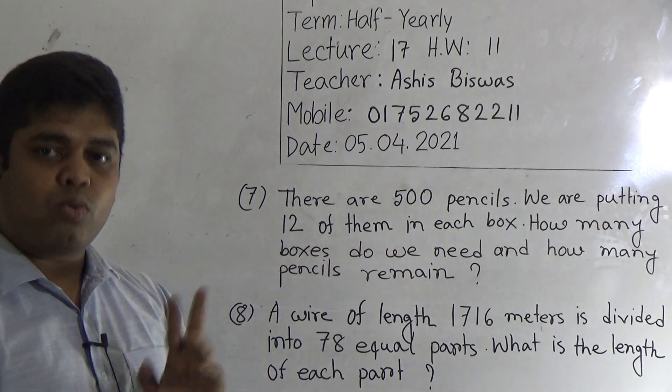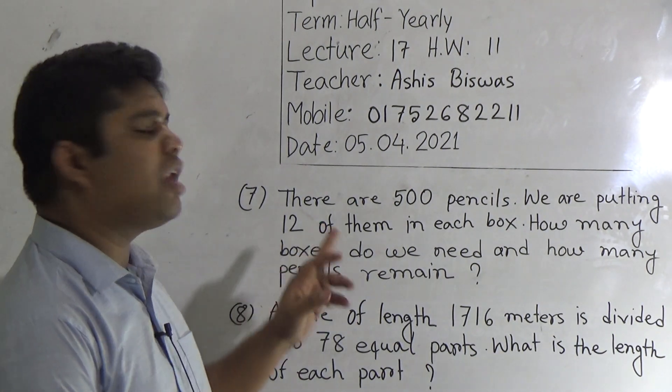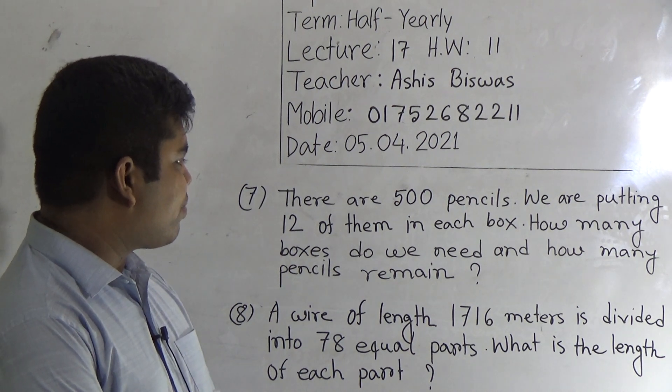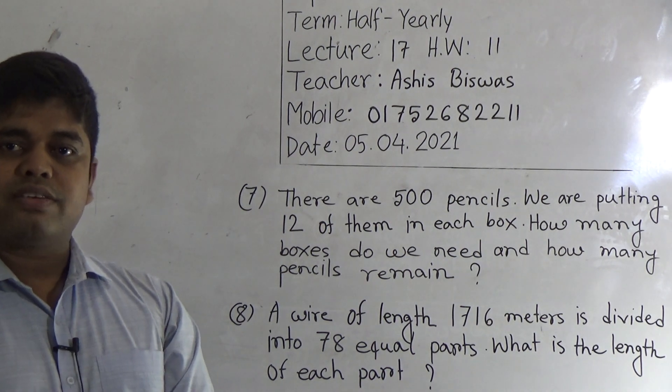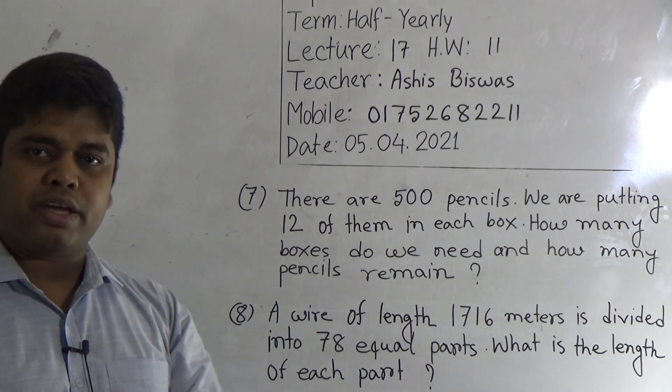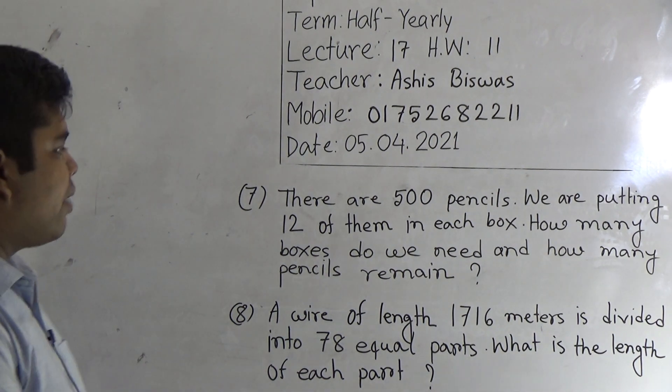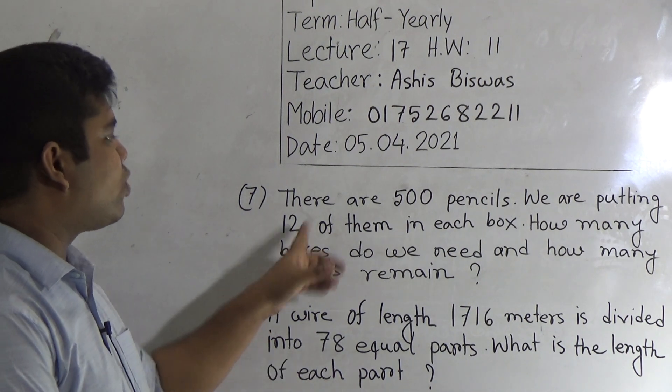That means in one box we are putting 12 pencils. So in such way to put 500 pencils, how many box is needed and how many pencils is remained after keeping the box? So how can we solve? Now we write in one box we put 12 pencils.